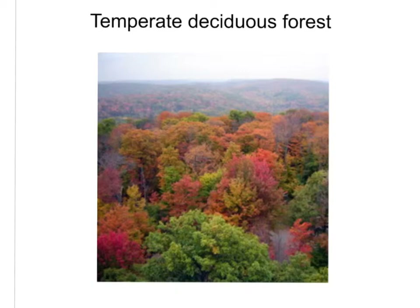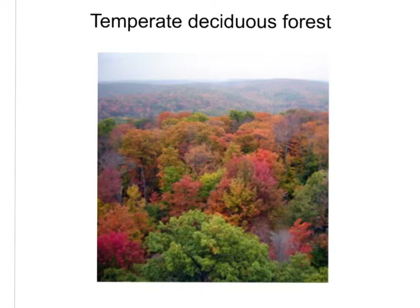Temperate deciduous forests, as the name suggests, contain deciduous trees but also coniferous trees. Deciduous means trees that lose their leaves annually, and coniferous means trees that produce cones — like fir, pine, and spruce. In temperate deciduous forests there's usually a lot of rain and snowfall and high humidity. This biome is more open — the trees are not as tall as in tropical forests, so it's not as dense. Temperate forests also have quite a few layers of producers: short herbs, intermediate shrubs, and tall trees. They have very diverse animal species as well.